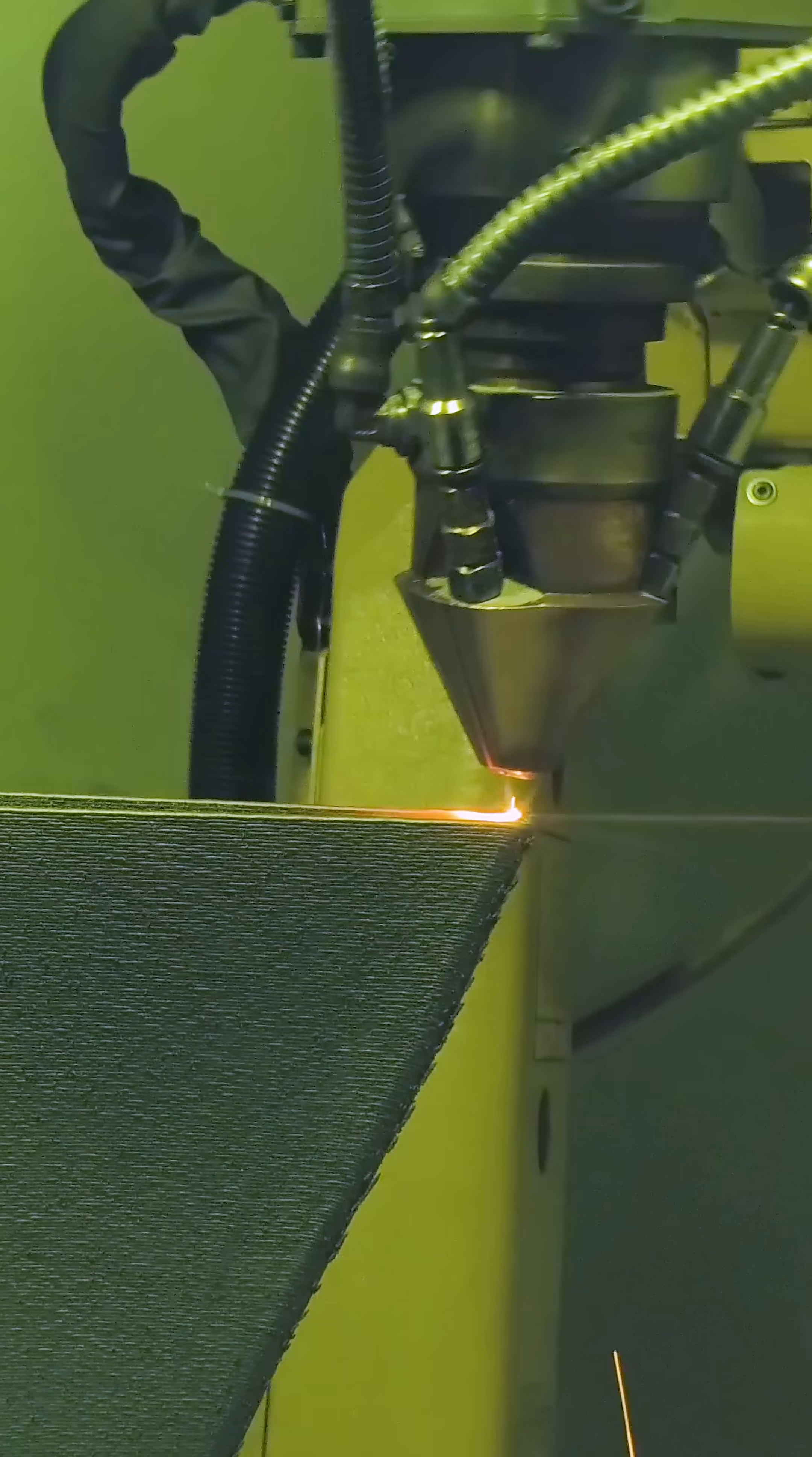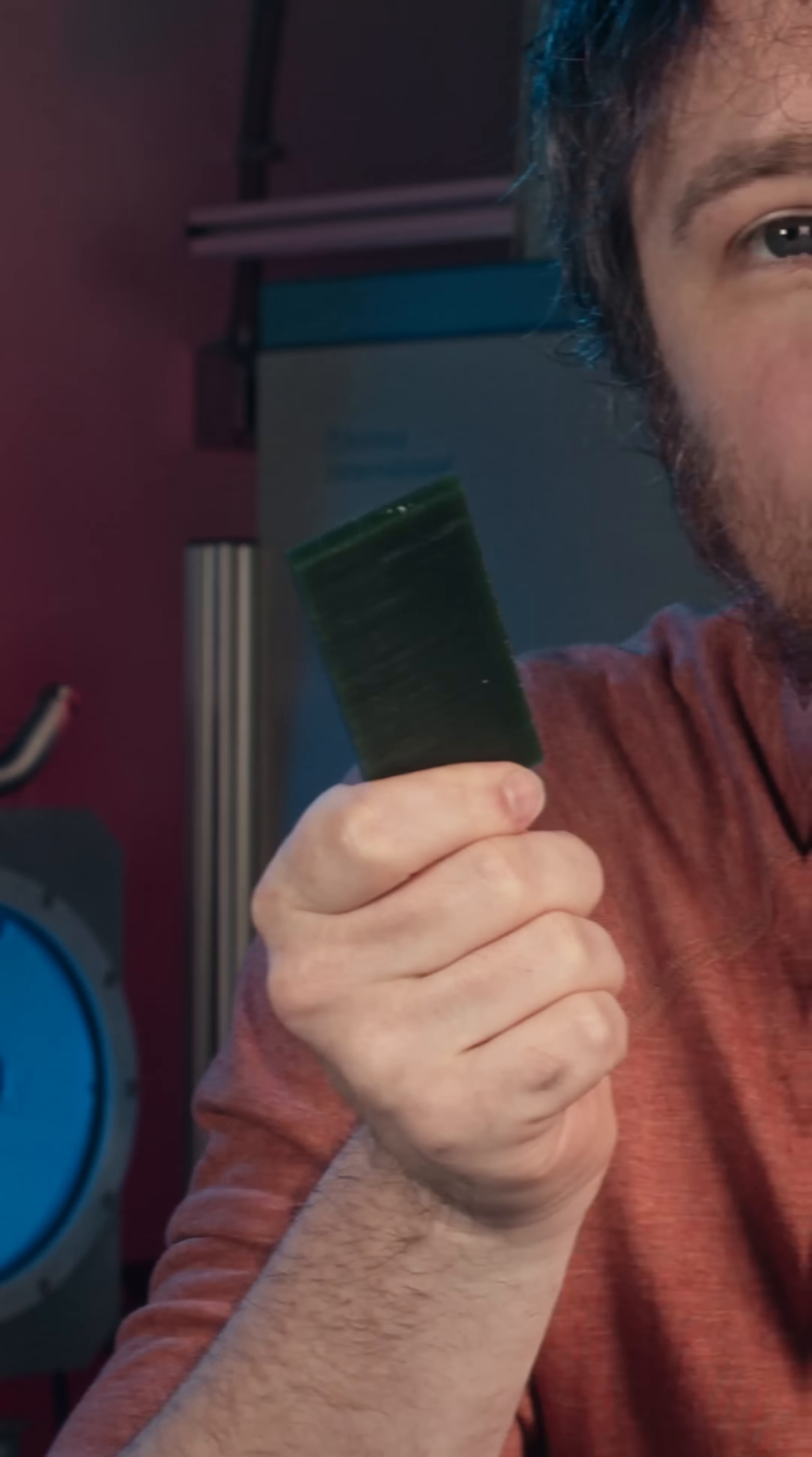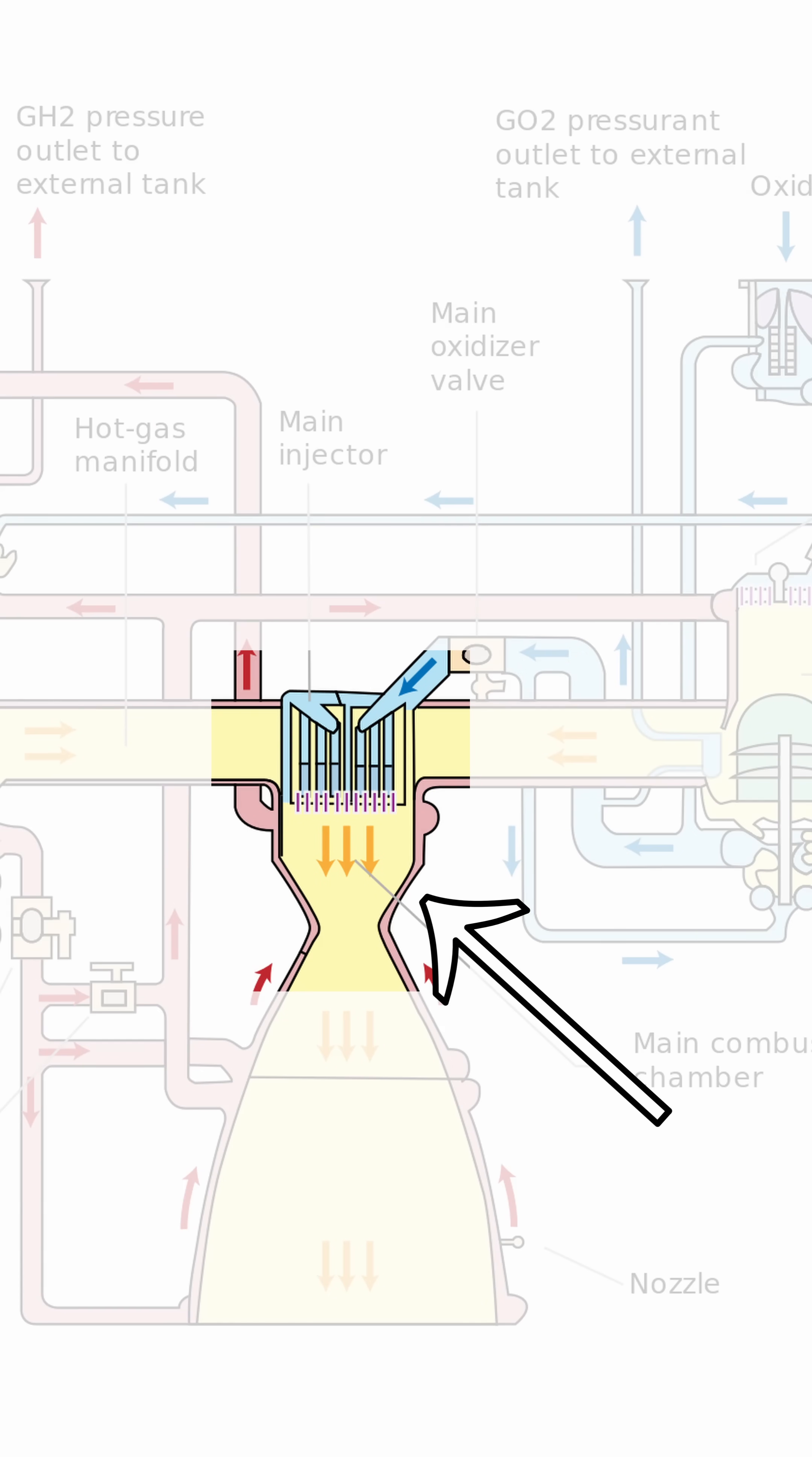If the year was 2023, you could just 3D print it out of metal. But that's not an option, because it's the 70s. And so, it's time to break out your secret weapon, wax. And it was absolutely critical to manufacturing the space shuttle's main combustion chamber.